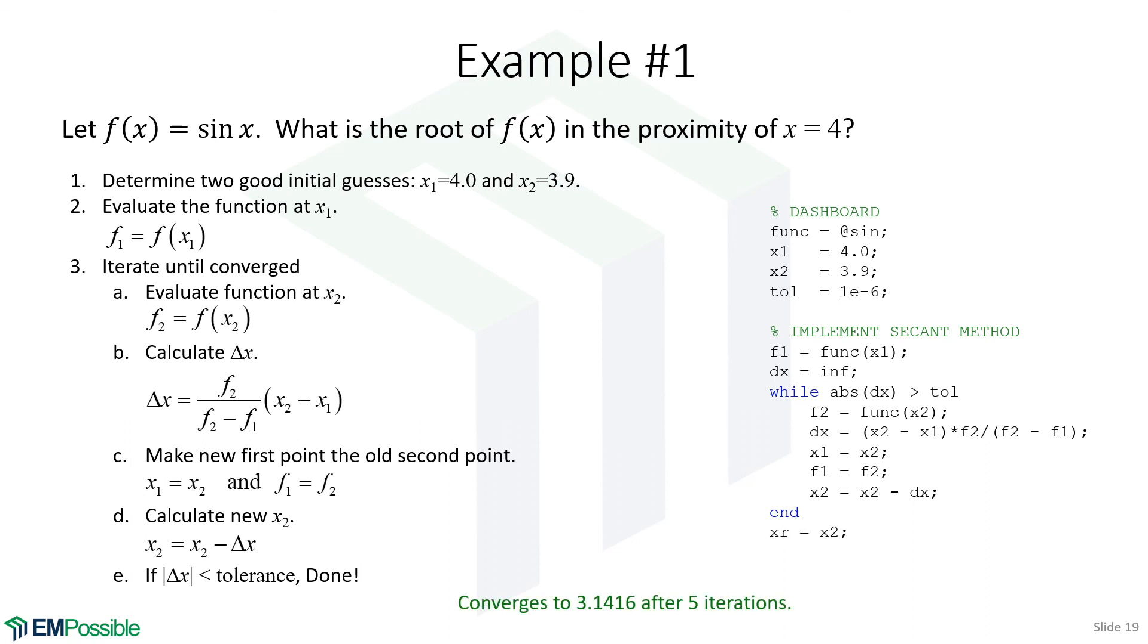This converged after five iterations. So it cost us an extra iteration. And that's the price we pay for the fully numerical algorithm. So we could expect this, if we were to run this against Newton-Raphson, to maybe take an extra few iterations because it's fully numerical.